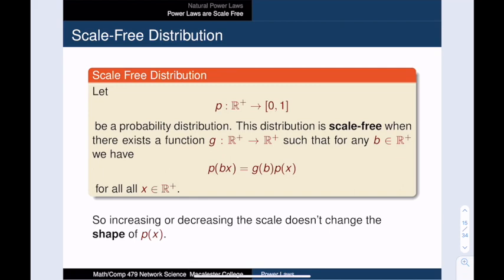Here's the official definition of a scale-free distribution. The distribution p is scale-free when there exists a function g such that for any positive number b, we have p(bx) = g(b)p(x). The constant b is our dilation factor. When b is less than 1, we are zooming in. When b is greater than 1, we are zooming out. What this definition is saying is that the zoom factor is what matters, not the particular location x. That is, we have some multiplication factor on the probability that only depends upon the dilation factor b, and is independent of position x.